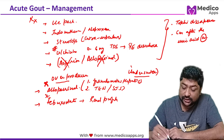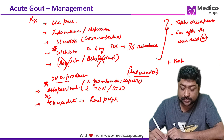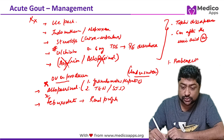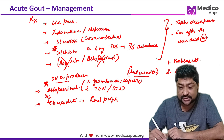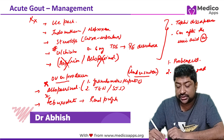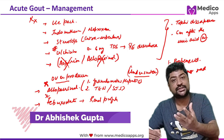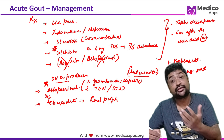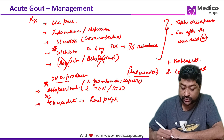For under-excretors, there are two drugs: probenecid, which increases uric acid excretion, and lesinurad, which decreases reabsorption of uric acid in the kidney tubules. So lesinurad and probenecid are the two drugs used for under-excretors.